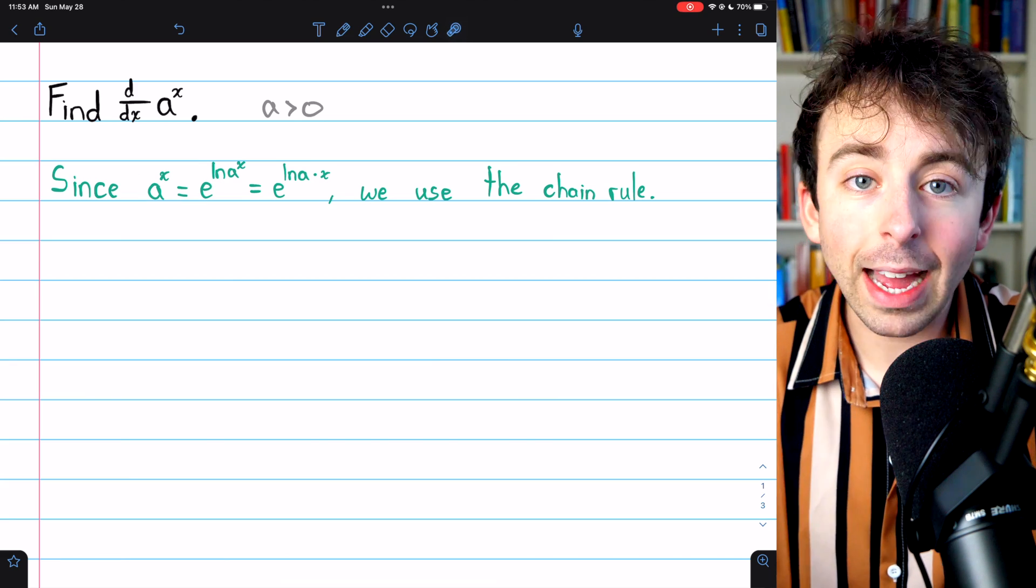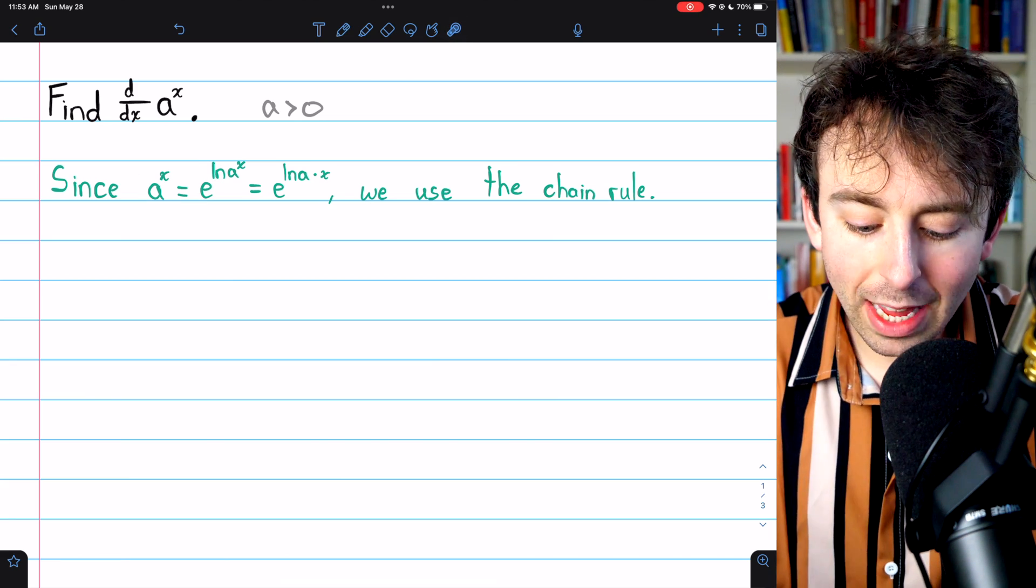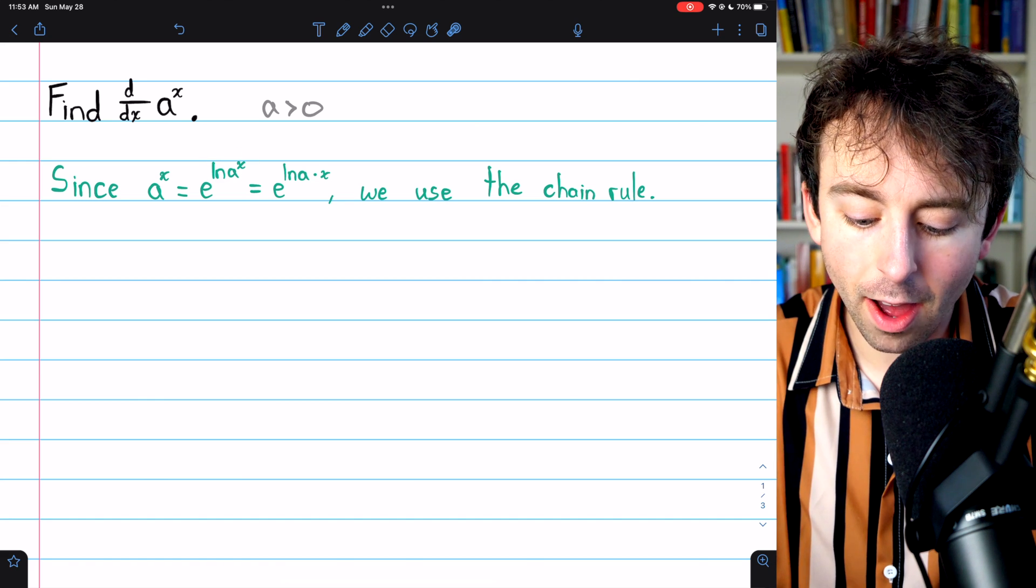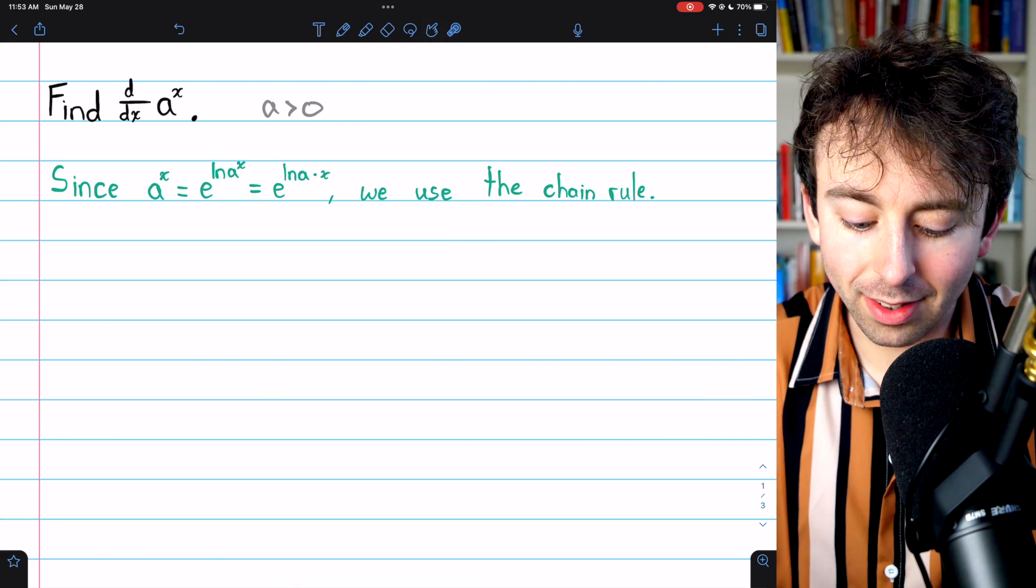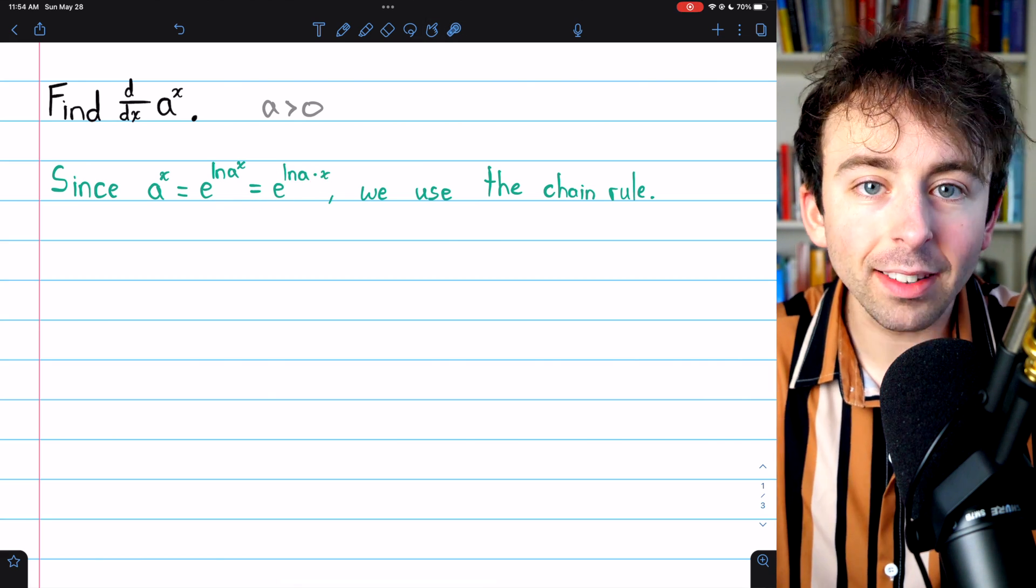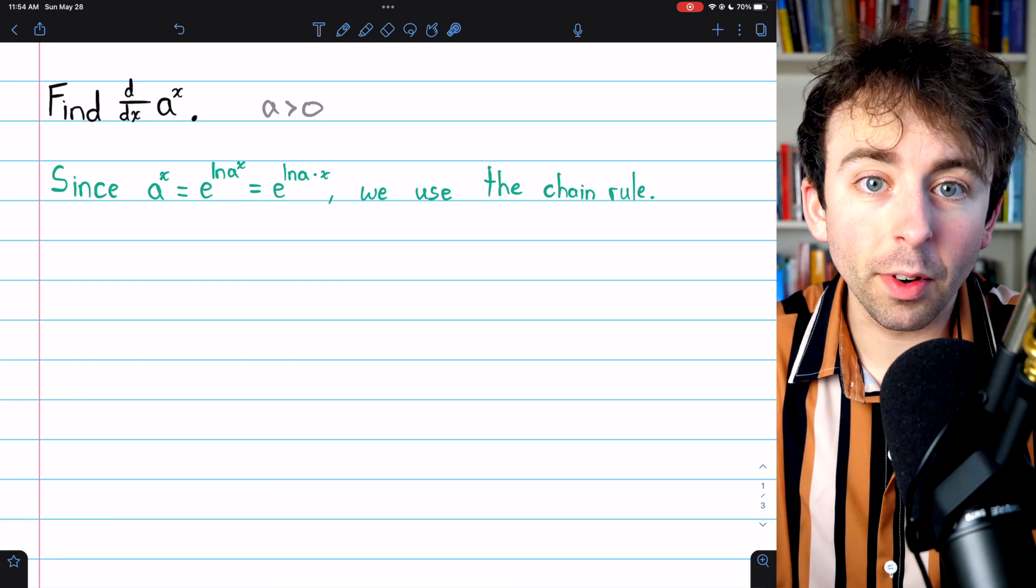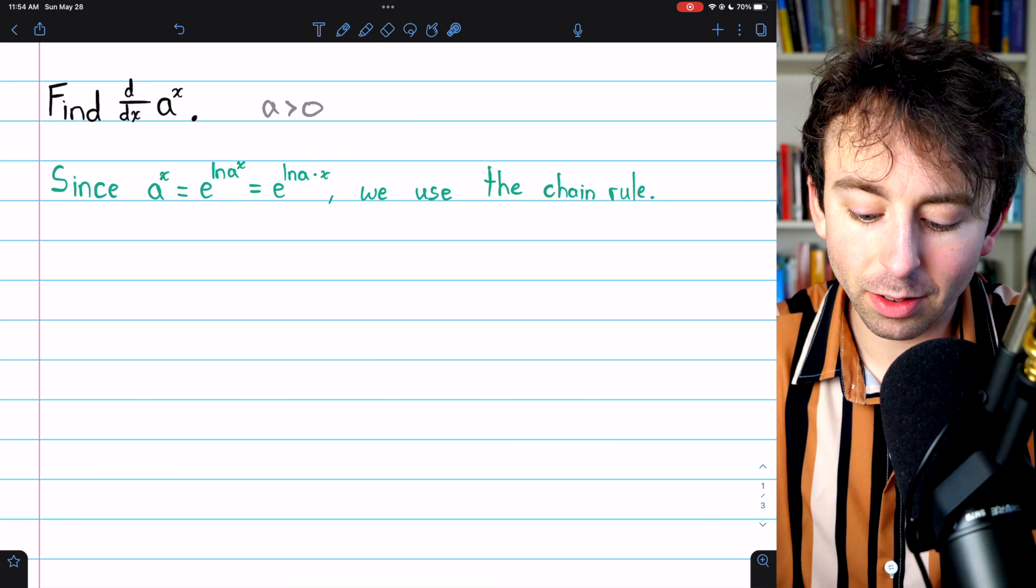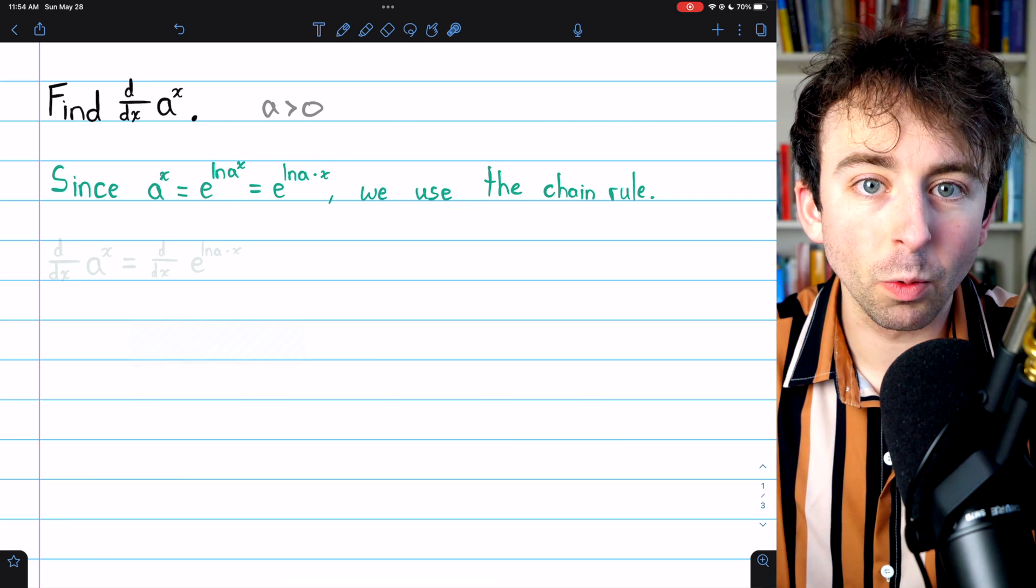But then by our log properties, we can bring this exponent of x that's in the log out as a factor. So this is equal to e to the ln a times x. So we've got a composite function here. We've got e to the power of a function. So we'll be able to use the chain rule.